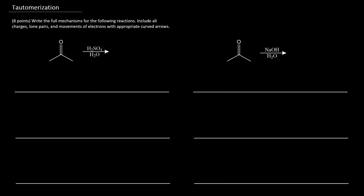This is an exam review question related to keto-to-enol tautomerization. The problem asks us to write the full mechanisms for the following reactions, including all charges, lone pairs, and movements of electrons with appropriate curved arrows. The problem involves two ketones — both of which are acetone — and asks us to write the full mechanism in the presence of acid or base. The mechanism implied is keto-to-enol tautomerization, though acetal formation can also be implicated with these reagents.